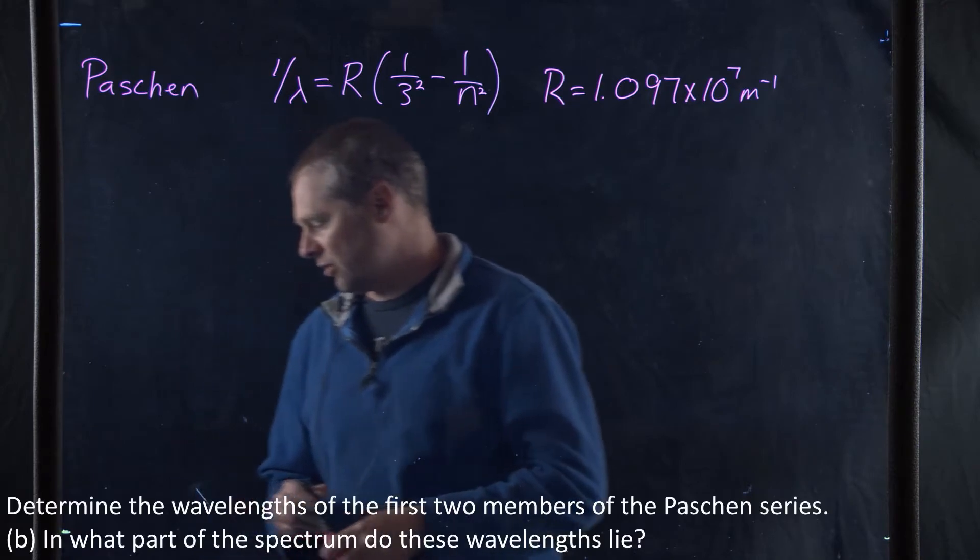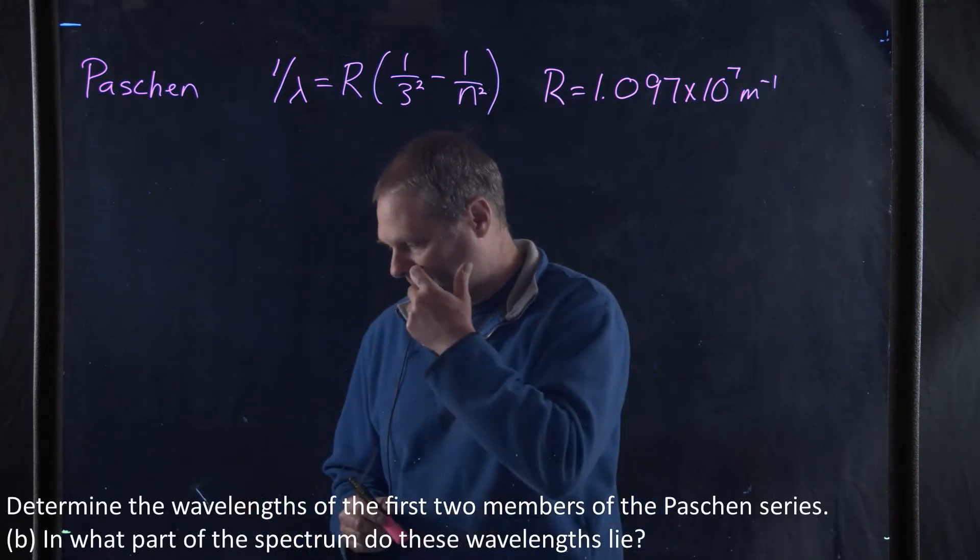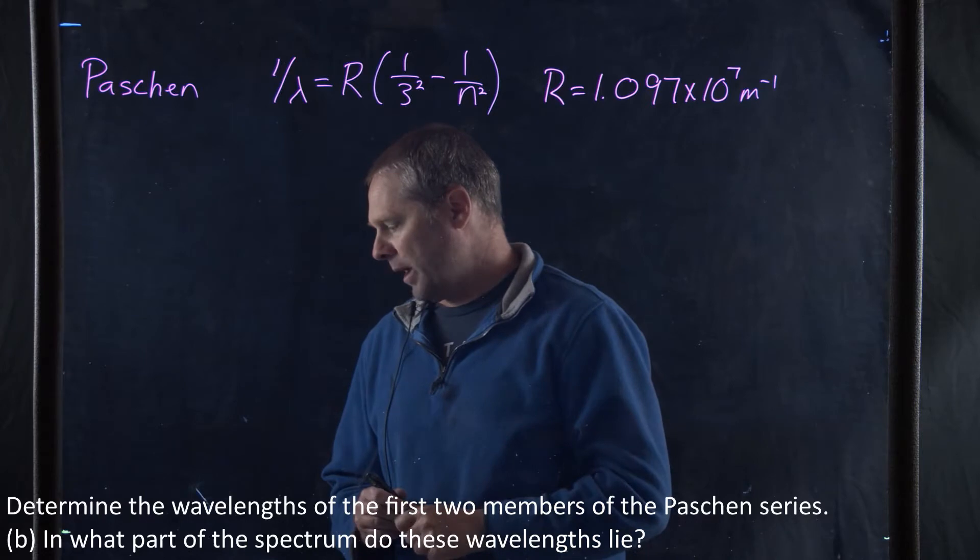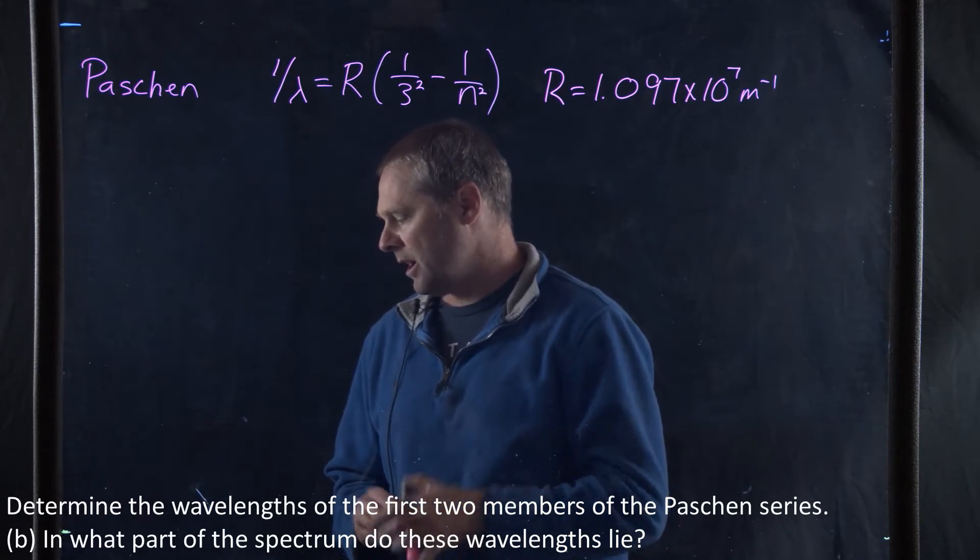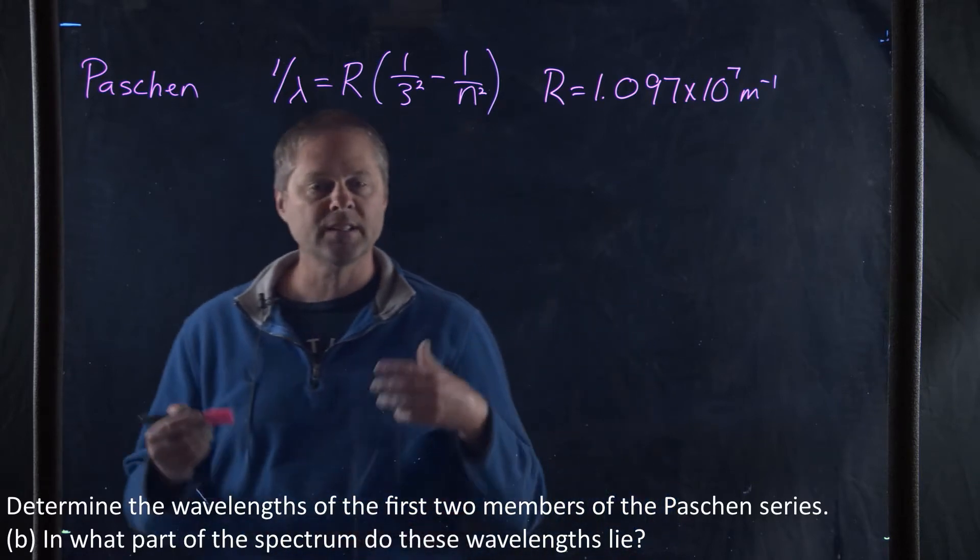The question says the Paschen series is the spectrum of hydrogen involving transitions that end up onto the third level. Determine the wavelength of the first two members of the Paschen series, and in what part of the spectrum do these wavelengths lie?